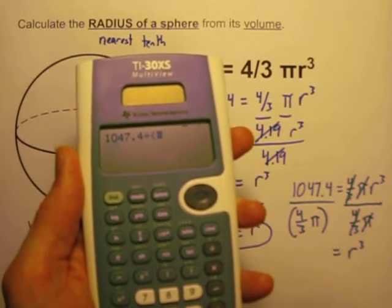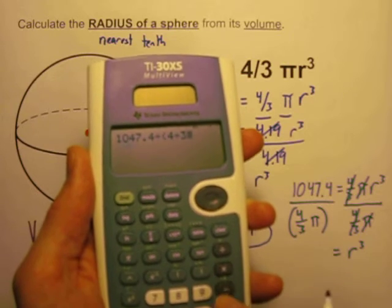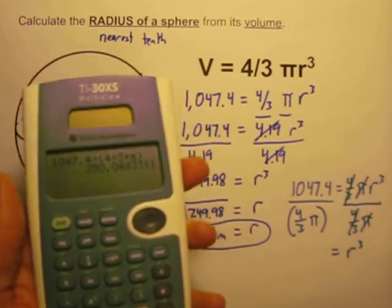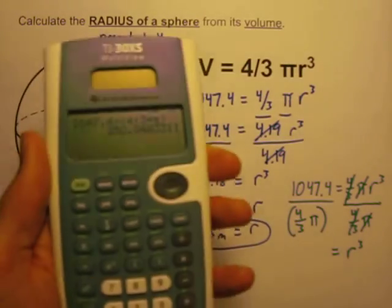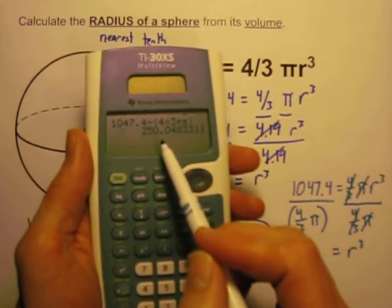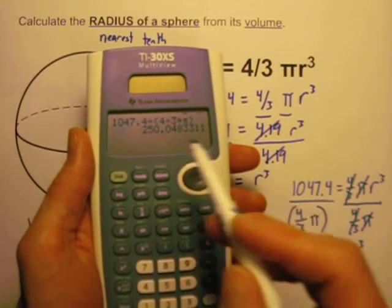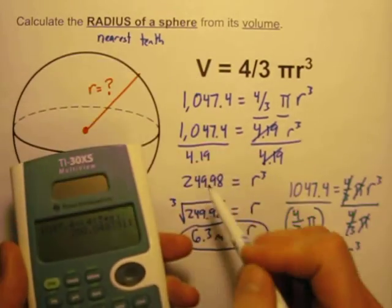I'm going to do 1,047.4 divided by, and I'm going to put parentheses around the 4/3 times π, so I'll use the parentheses key, 4 divided by 3 times π, close the parentheses, equals, and it looks like I'm going to get here 250.04, which I'll round to the nearest hundredth.